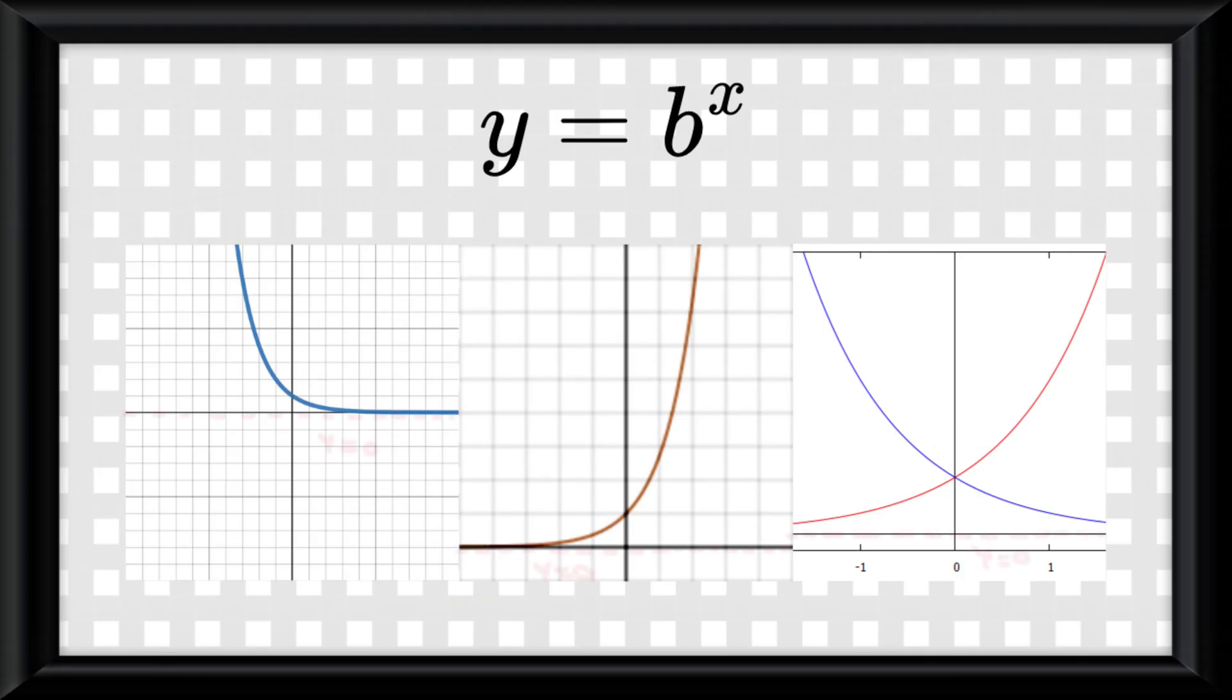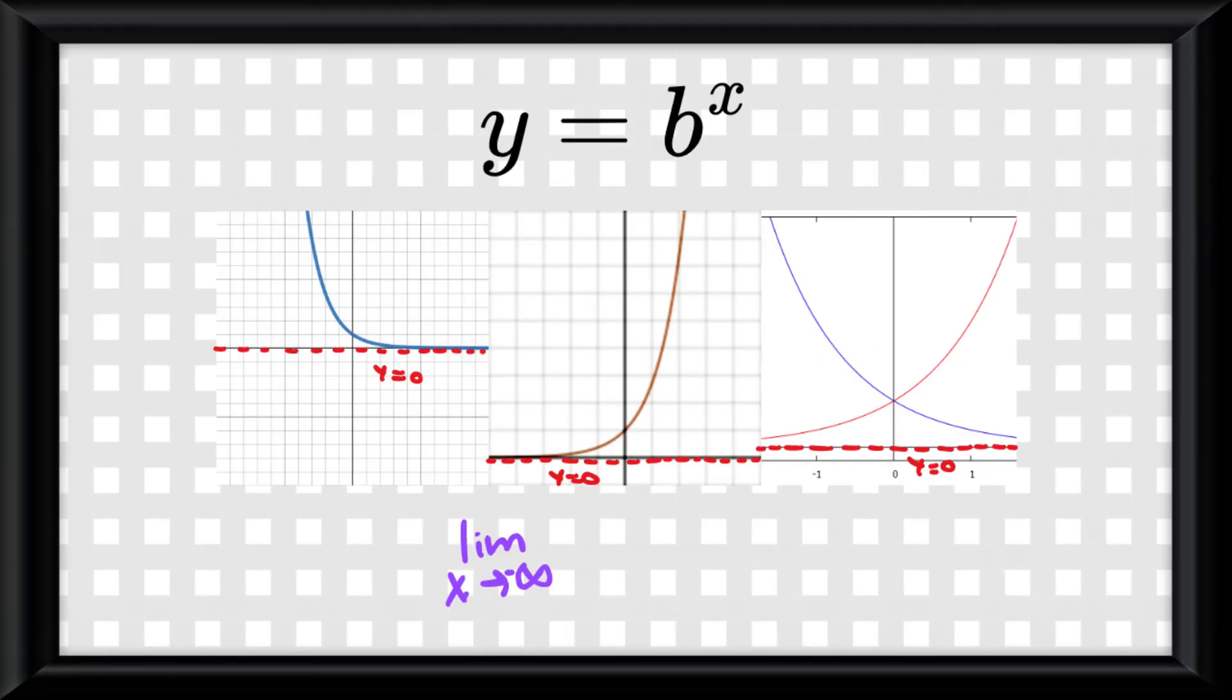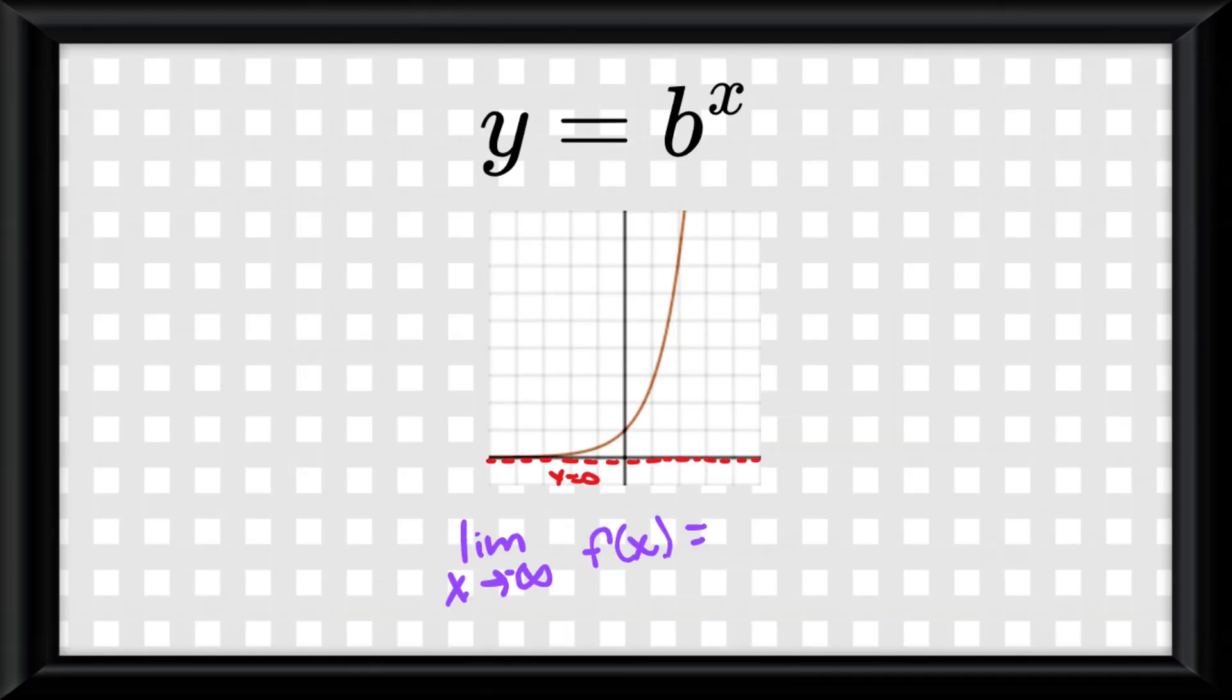The second thing we see is that there is a horizontal asymptote at y equals 0. And this would mean the limit as x approaches negative infinity of any growth parent function would be 0. And of course, as x approaches positive infinity, all growth parent functions would approach positive infinity.